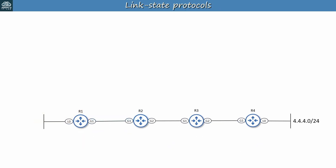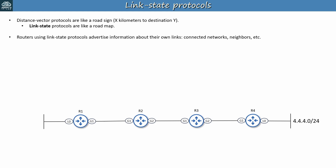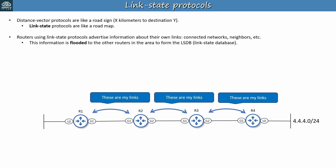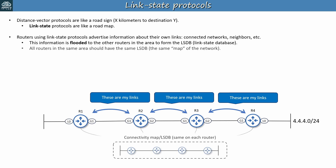Next we have link state protocols. Distance vector protocols like RIP are like a road sign — routers share information like X miles to reach destination Y. On the other hand, link state protocols are like a roadmap. Each router has a complete map of the network and uses it to calculate the best route to reach each destination network, using a shortest path first, or SPF, algorithm. Routers using link state protocols advertise information about their own links — the connected networks, neighbors on the link, etc. This information is flooded to the other routers in the area to form the LSDB, the link state database.